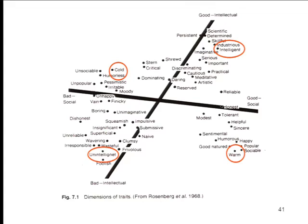The implication of Rosenberg's analysis is that the closer a trait lies to one of these axes — intellectual good-bad or social good-bad — the more central that trait will be to impression formation, because traits near these axes carry more information. If I tell you somebody is vain or tolerant, that tells you a lot because it implies many other good or bad social traits. If I tell you somebody is dishonest or stern, it lies far from the axis and doesn't tell you much about whether the person is nice or smart. What makes a central trait central is that it captures one of these two basic dimensions of impression formation.